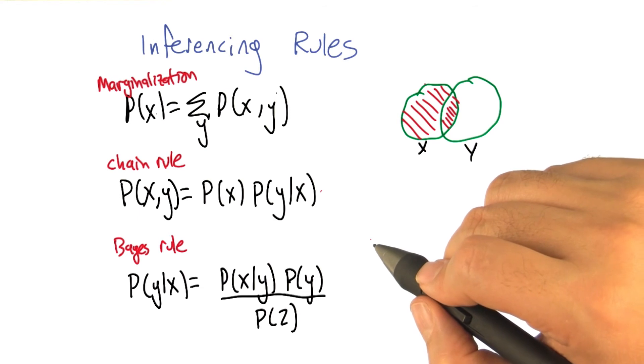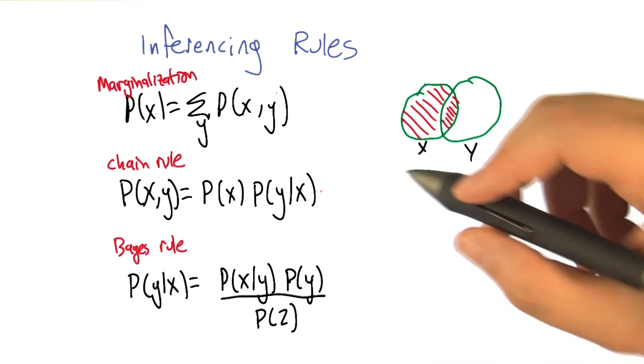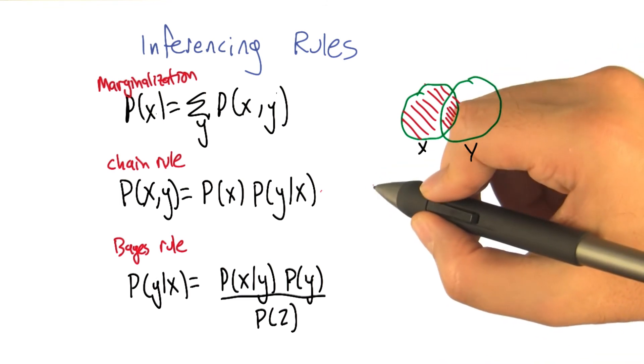And as I recall, the order on the left doesn't matter. So you have the probability of x times the probability of y given x, but you could have written the probability of y times the probability of x given y. Yes. And actually, let's do a quick quiz.